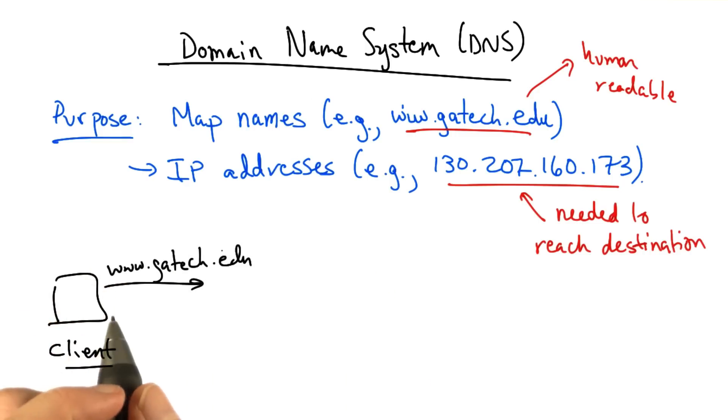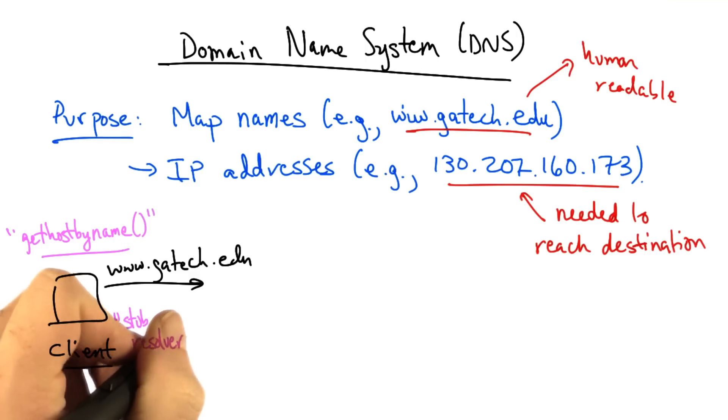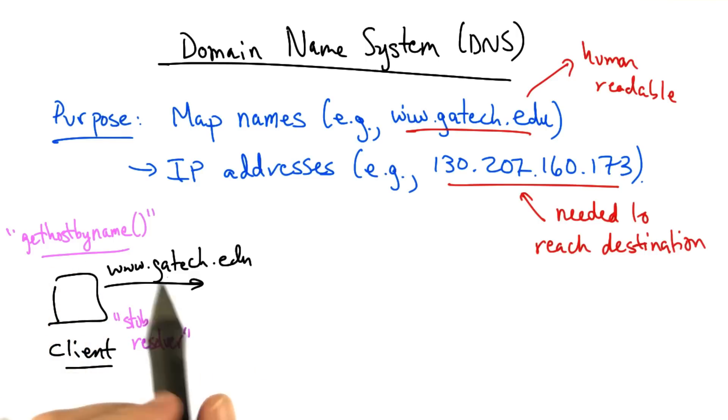The system roughly works as follows. A client might want to look up a domain name, such as www.gatech.edu. A networked application's source code might do so by invoking a function such as gethostbyname, which takes as an argument a domain name and returns an IP address. The client typically has what's called a stub resolver, and that stub resolver takes that name and issues a query. The stub resolver might have cached the answer, or the IP address corresponding to this name.